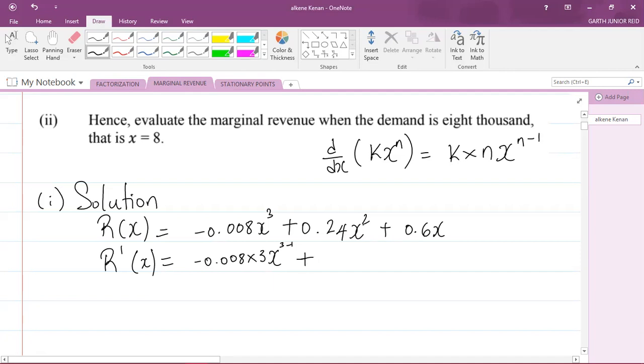Plus, for the second term here, I'm going to multiply the 0.24 by the power of two: 0.24 multiplied by two, multiplied by x, but decrease the power of two by one, so you get two minus one. Now here we have x to the power of one, so I'm multiplying that one by 0.6, so I get 0.6 multiplied by one times x, decrease the power of one by one, that's one minus one.